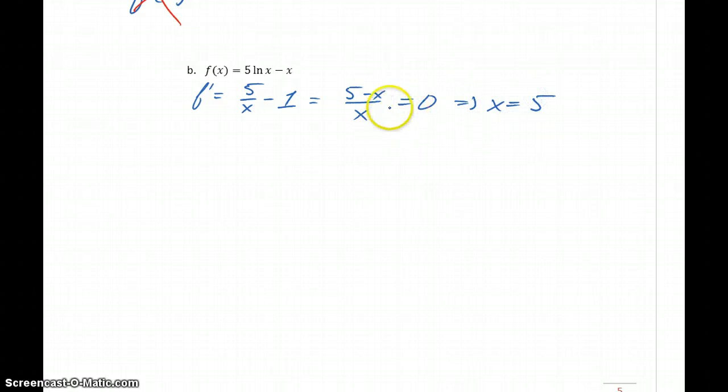Our first derivative function will be undefined whenever x equals 0. Just like in part A, we can throw that value out because we're considering the open interval from 0 to infinity, so 0 is not part of the domain we're considering. The only critical value is x equals 5.